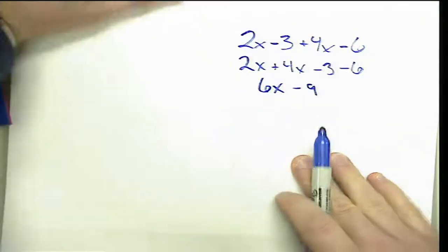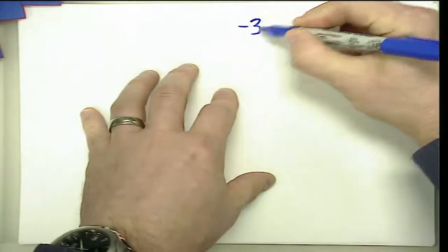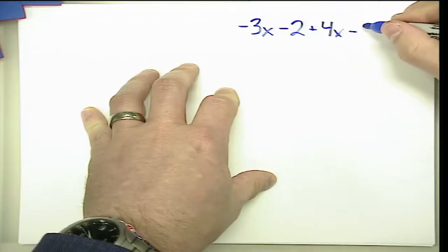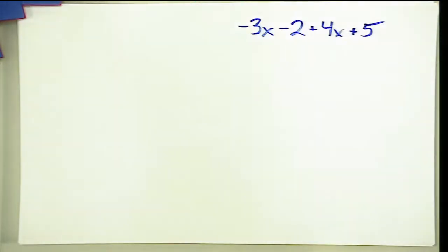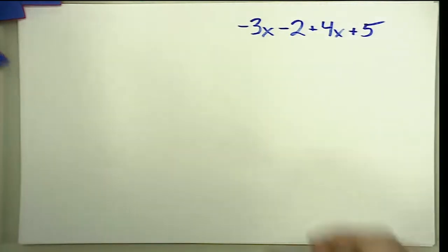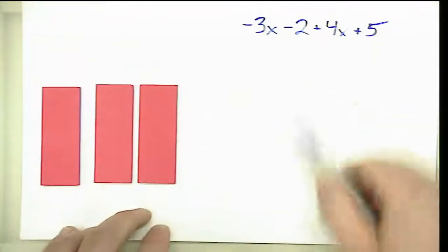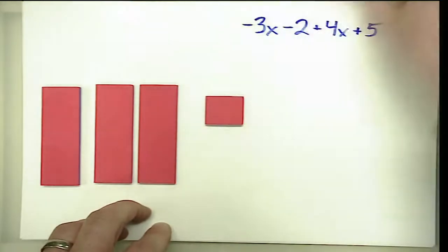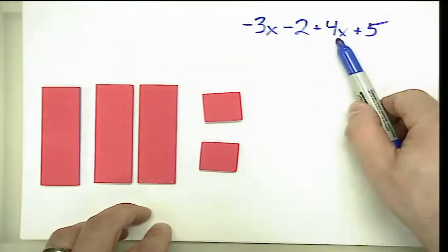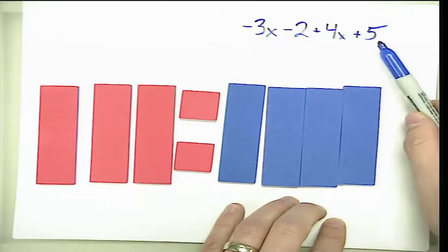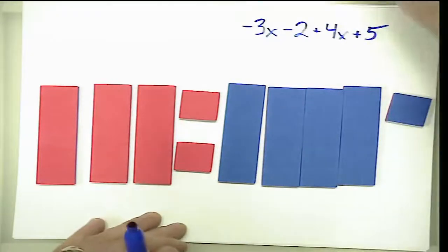Let's do one more example. We start with negative 3x minus 2 plus 4x plus 5. We interpret term by term: negative 3x is modeled first, then a negative 2 modeled with 2 negatives, then a positive 4x modeled with 4 blue x-tiles, and last a positive 5 modeled with 5 positive 1-tiles.